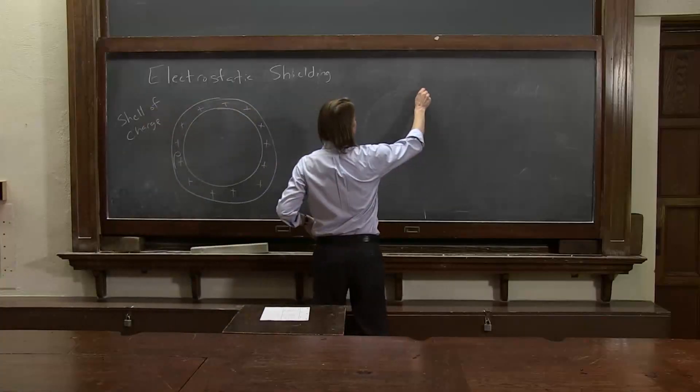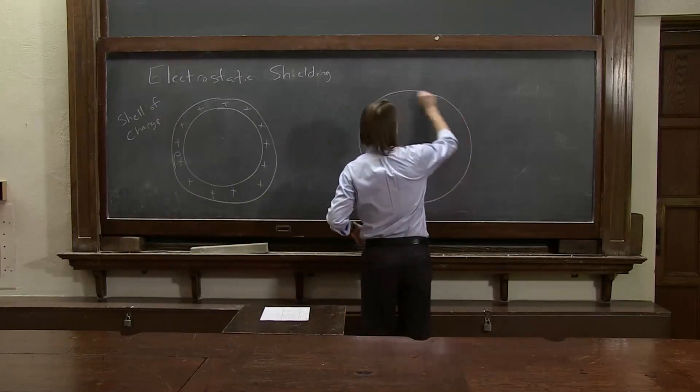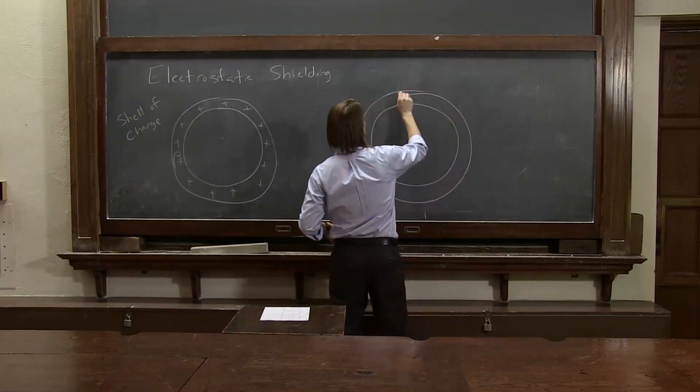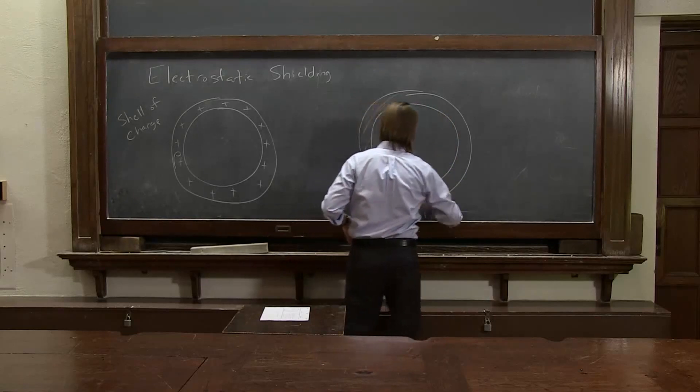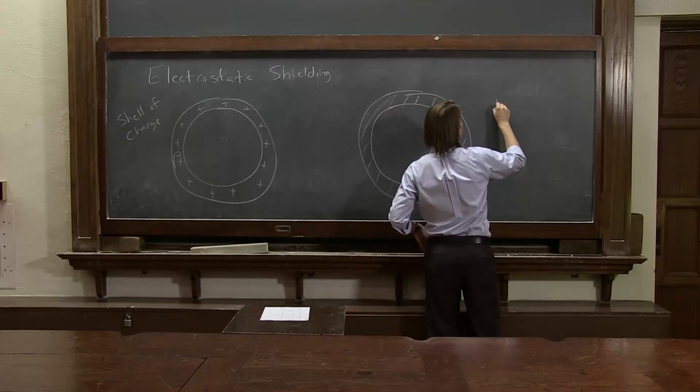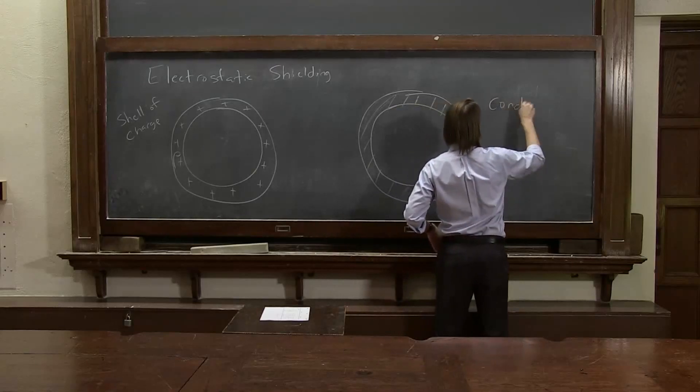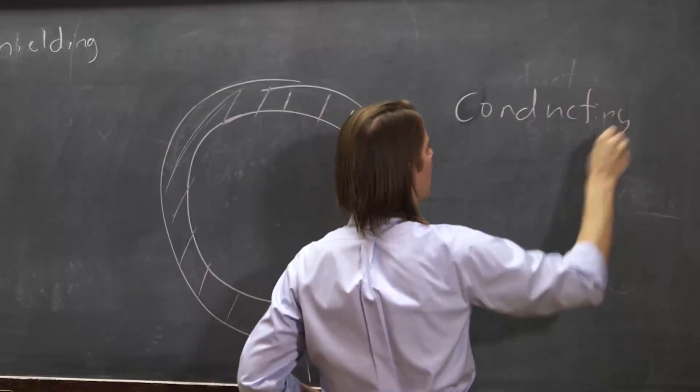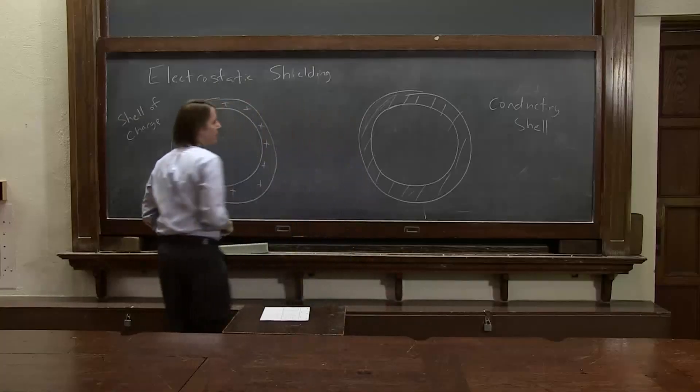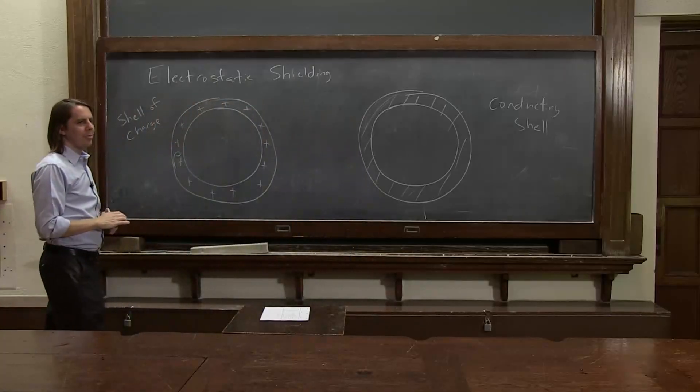You could also think about a metallic shell. All right, so I'll kind of hatch mark that to show that it is a conducting shell. It's probably a metal. It doesn't have to be. So will either of these stop an electric field?